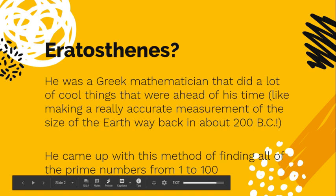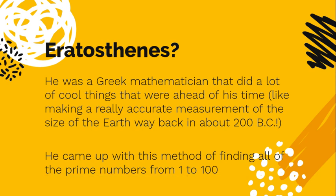So he was a Greek mathematician a long time ago, like back in 200 BC, that did lots of cool things like making a really accurate measurement of the size of the earth. But what we're interested in is that he came up with this method for finding all of the prime numbers from 1 to 100.